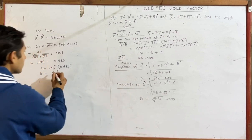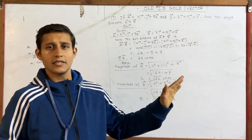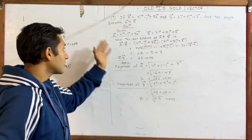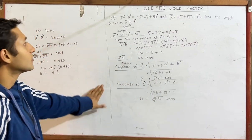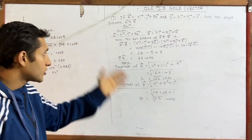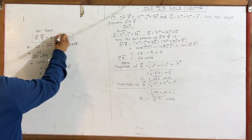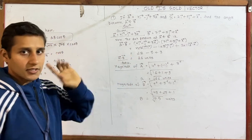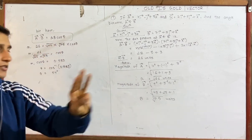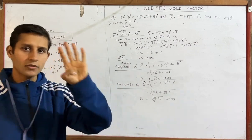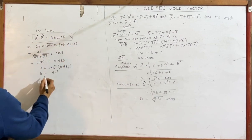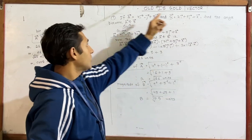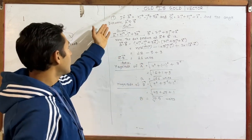Then theta equals cos inverse of 0.589, which gives approximately 54 degrees. The calculation may not look clean, but the process is complete. We focus on the process and the mechanism. This is the complete method for finding the angle between two vectors when two vectors are given.